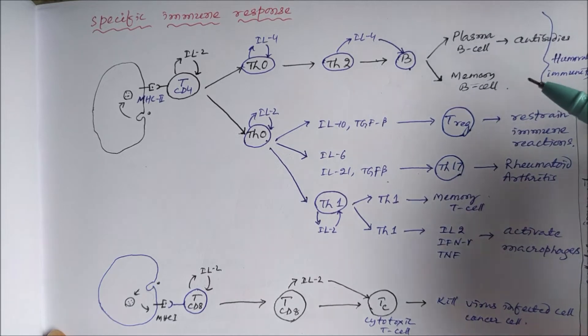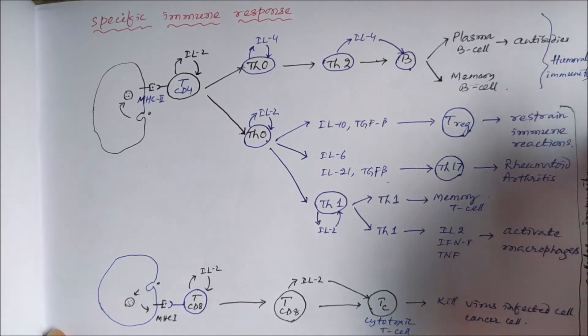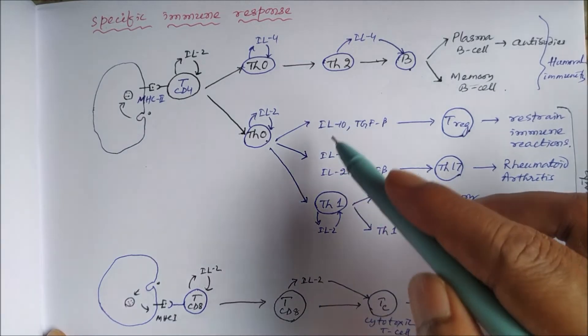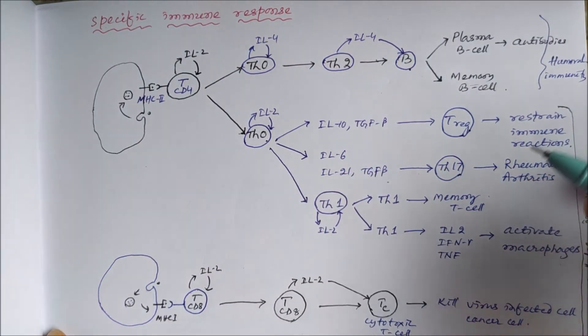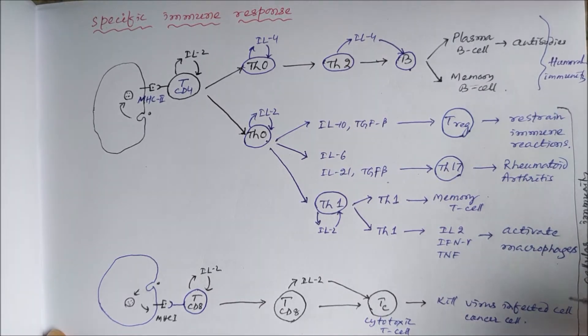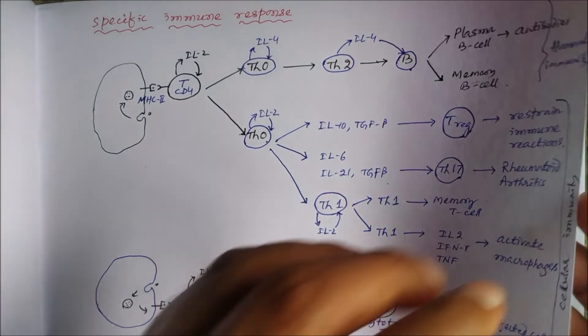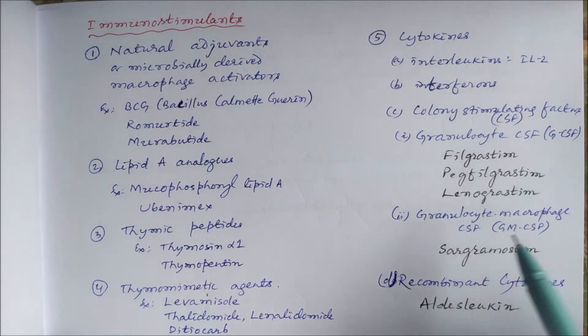They provide immunity either through antibodies or humoral immunity, or through cytokines like interleukins, transforming growth factor, interferons, tumor necrosis factor, or they can directly kill the infected cell. That is called cellular immunity. So the immunostimulants include either cytokines or thymic peptides.